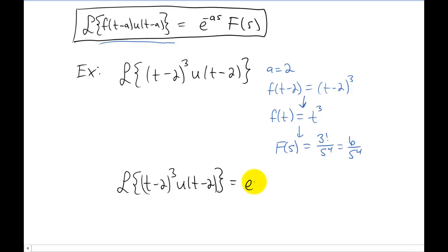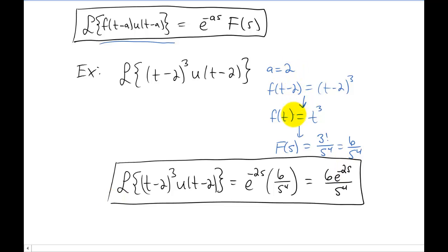Our answer is just going to be e to the negative a s, e to the negative 2 s times F of s. Which of course we can write a little bit more nicely. So that process is pretty notation intensive. But once you understand the notation, I don't think it's too difficult of a process.